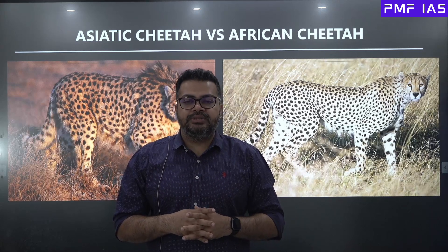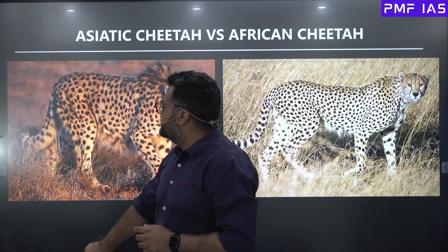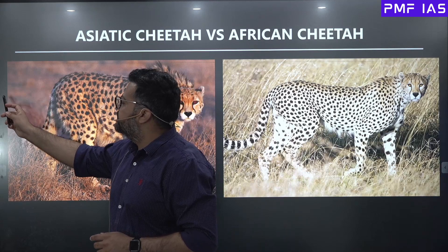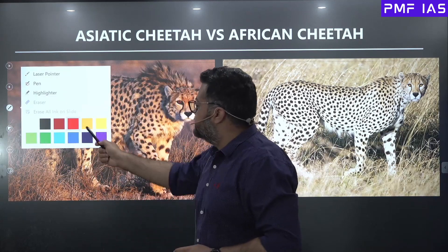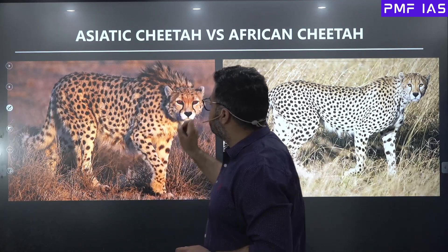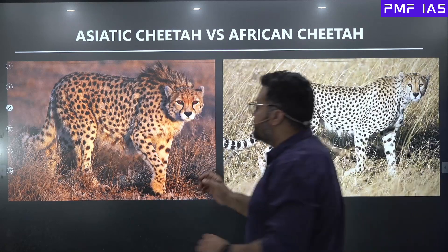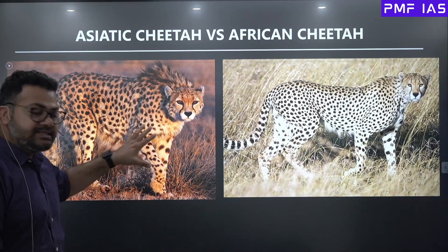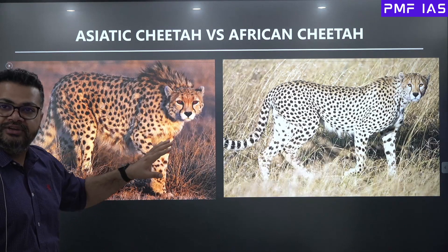Let's talk about these two animals and see what are the similarities and the differences. When you look at the image on the right, you can see this is the image of the Asiatic Cheetah. On the right, we have got the African Cheetahs. When you look at the Asiatic Cheetahs, you can easily see that some of the differences happen to be quite evident.